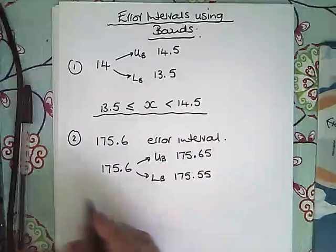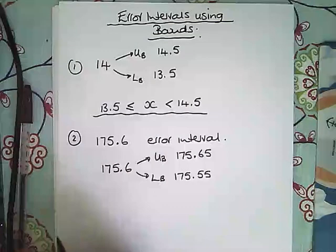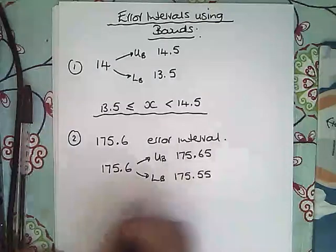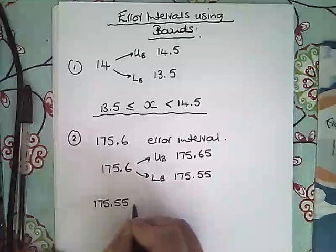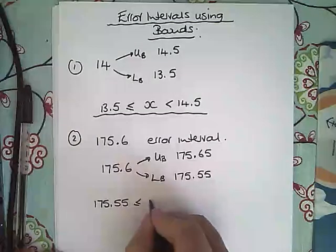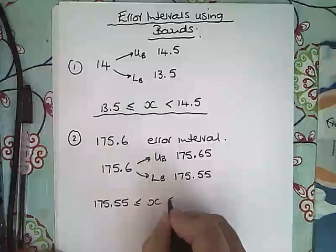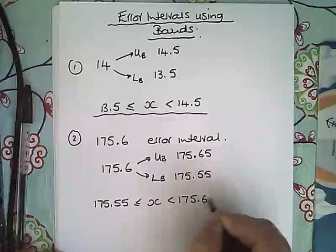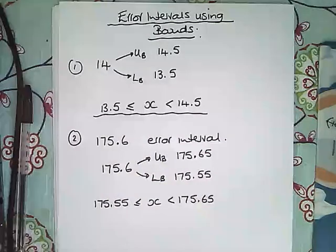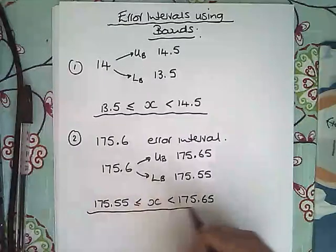And then I would use this notation to write my error interval. So the lowest value, 175.55. It could equal that. And it goes all the way up to 175.65, the upper bound, but it doesn't actually ever equal that value. Thanks for watching.